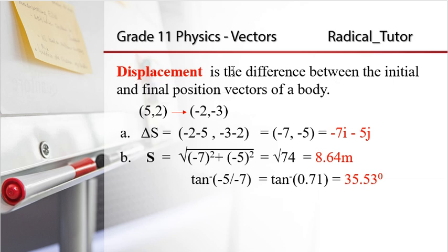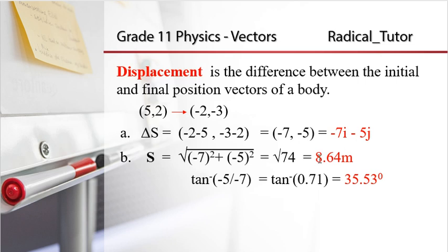The displacement is the difference between the final and initial position vectors. The x-component is -2 minus 5 = -7, and the y-component is -3 minus 2 = -5. So the displacement vector is -7i minus 5j cm. The magnitude is the square root of (-7)² plus (-5)², which is the square root of 49 plus 25, giving the square root of 74 cm.